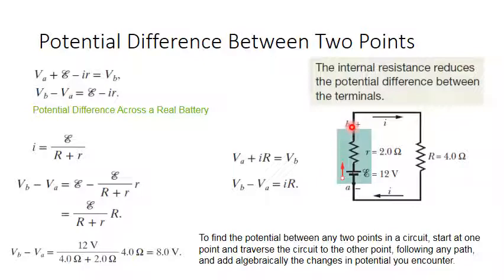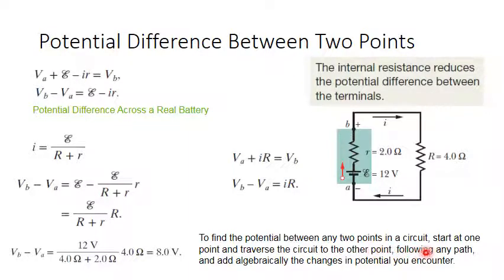For example, for the potential difference between points B and A, I can start from A and traverse the circuit to reach B, or I can start from B and traverse to reach A. The rule is: start at one point, traverse the circuit to the other point following any path, and add algebraically the changes in potential encountered — according to the direction of the current, the direction of the EMF, and the voltage drop across resistances.